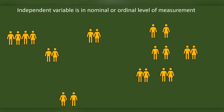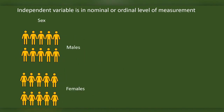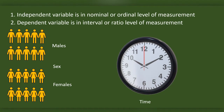We will use an independent sample t-test if the independent variable is at the nominal or ordinal level of measurement. The variable has categories, so such variables are also called categorical variables. The independent variable will be in two categories — for example, sex. We will have only one independent variable, but we can have more dependent variables.